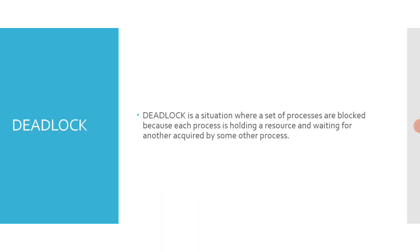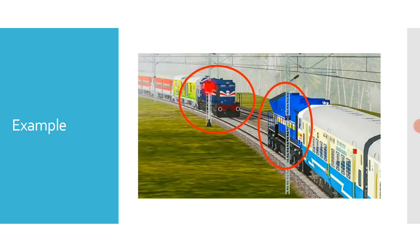To be more precise, consider an example when two trains are coming towards each other on the same track, as shown in the figure, and there is only one track. None of the trains can move once they are in front of each other. A similar situation occurs in operating systems when there are two or more processes that hold some resources and wait for resources held by others. Train one cannot move forward and train two cannot move forward because each is waiting for the other's resource — the track.